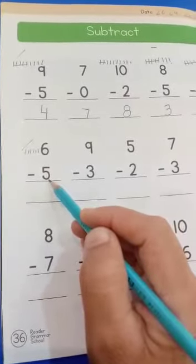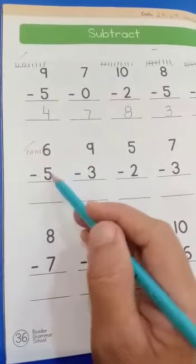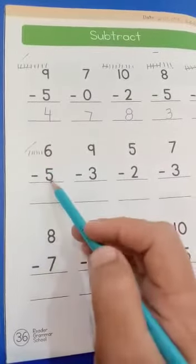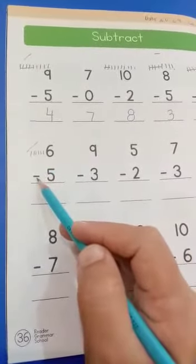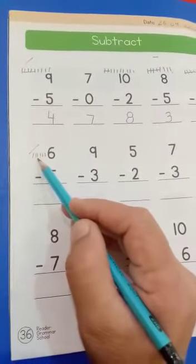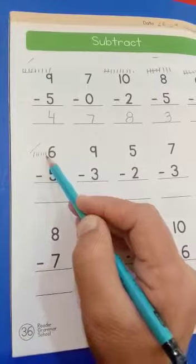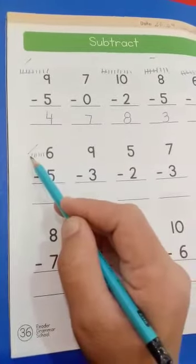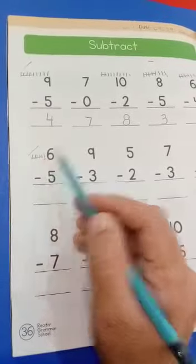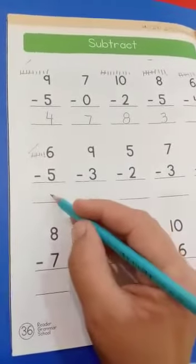6 minus 5. This minus sign - what does it mean? It means subtract. Now we will count: 1, 2, 3, 4, 5, 6. How many do we need to cut? 5. 1, 2, 3, 4, 5. How many left? Only one. Write over here.